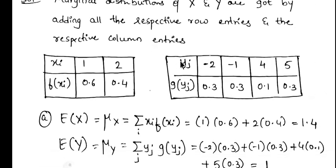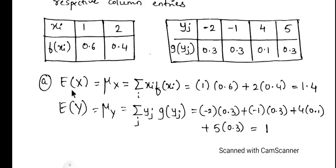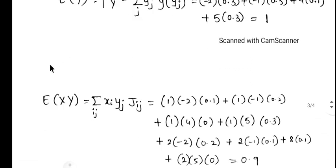Now we have calculated the marginal distribution. We will now calculate expectation of x, denoted by mu_x, using the formula summation of xi times f(xi). That is 1 times 0.6 plus 2 times 0.4, which gives 1.4. Similarly for y: summation of y times g(y) = (minus 2)(0.3) + (minus 1)(0.3) + (4)(0.1) + (5)(0.3) = 1.